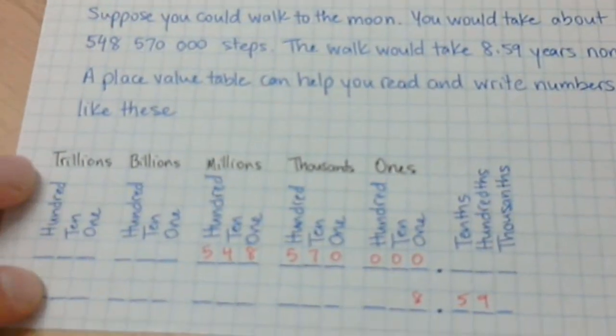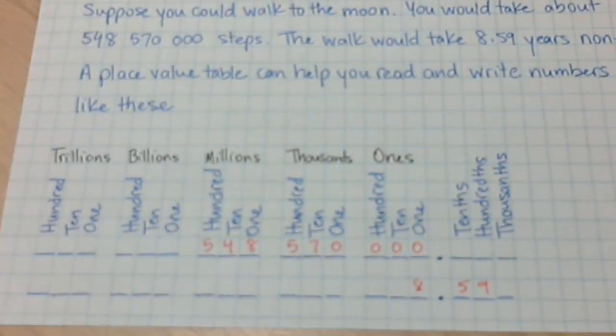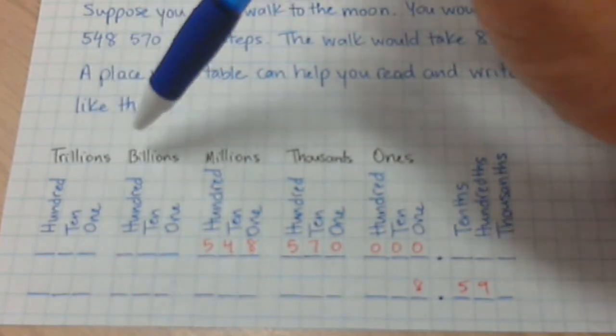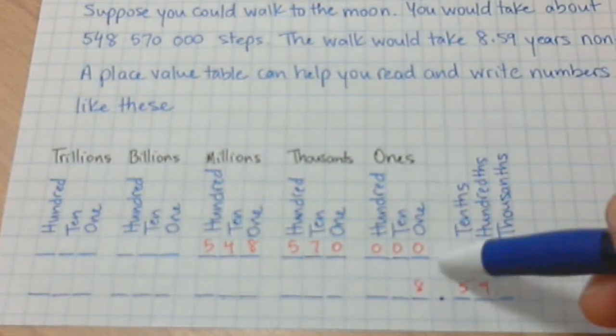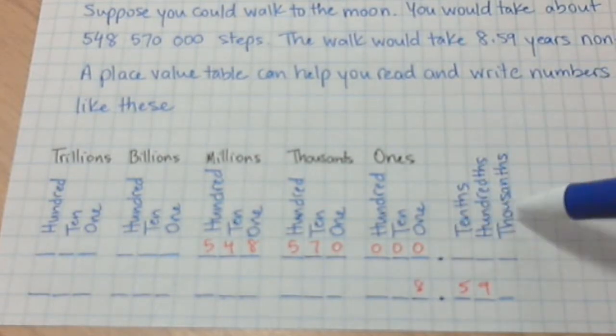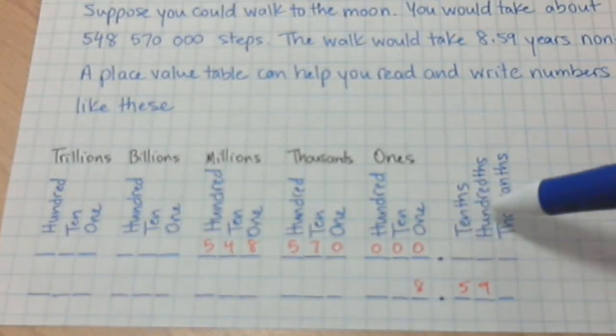Here we have a place value table, and it's separated into different sections, starting at trillions, to billions, millions, thousands, ones. And then there are decimal places here, and the first three places after the decimal are called tenths, hundredths, and thousandths.